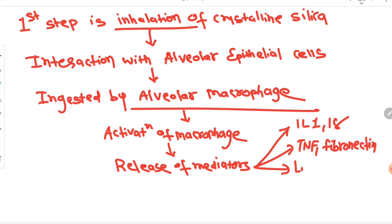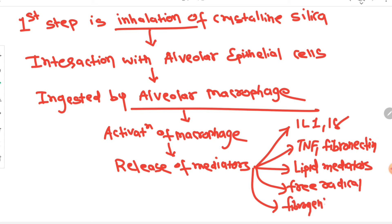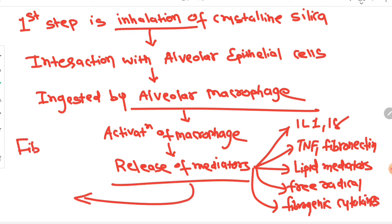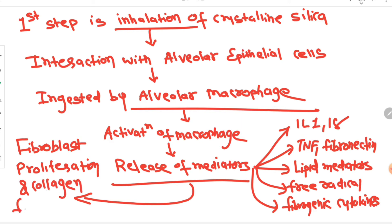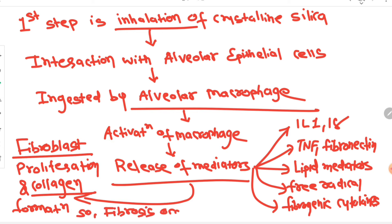The macrophages also release lipid-derived mediators, free radicals, and a variety of fibrogenic cytokines such as fibroblast growth factor and platelet-derived growth factor. Because of this release of mediators, fibroblasts get proliferated, leading to collagen formation and fibrosis in the lung. That is the complete mechanism for development of diffuse interstitial fibrosis in silicosis.